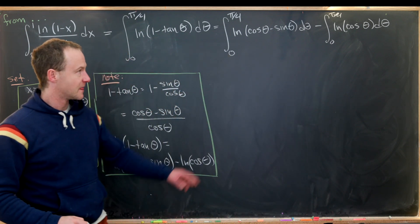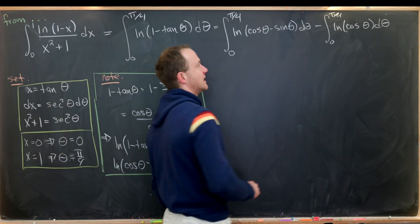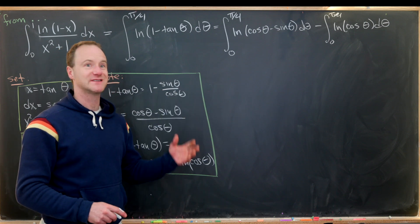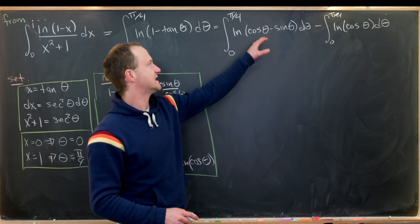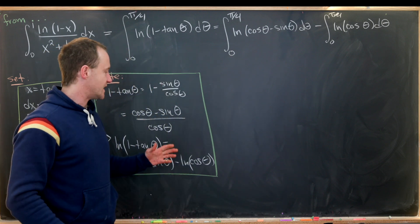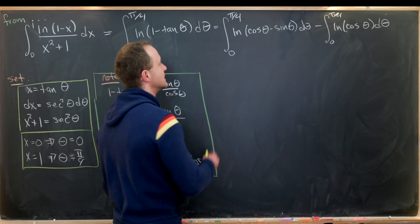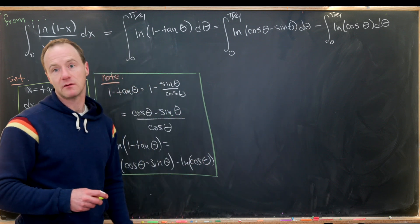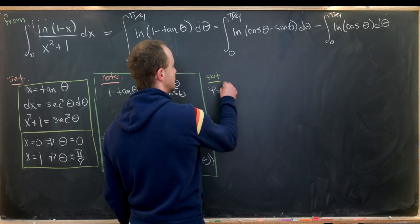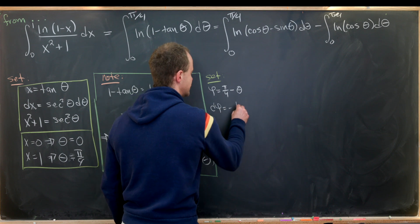This second integral looks similar to one we've seen on the channel before, but that one had endpoints 0 and pi over 2. With 0 and pi over 4, it's a little trickier. So we'll focus on the first integral and simplify it with another change of variables. Let's set phi equal to pi over 4 minus theta, so d phi equals minus d theta.